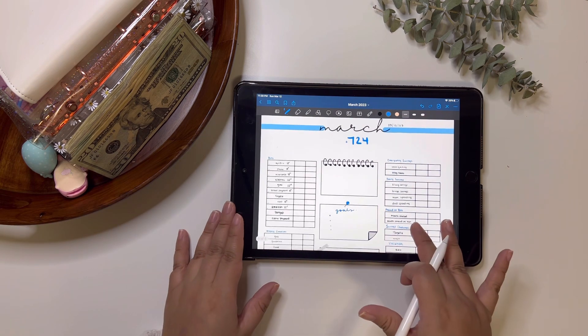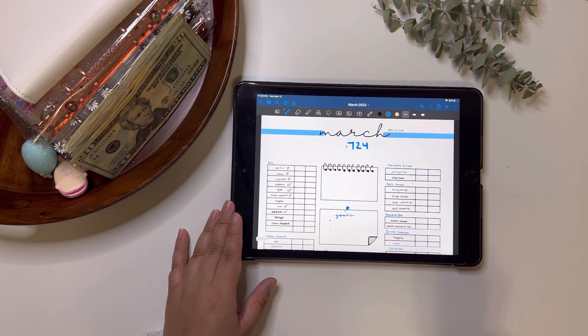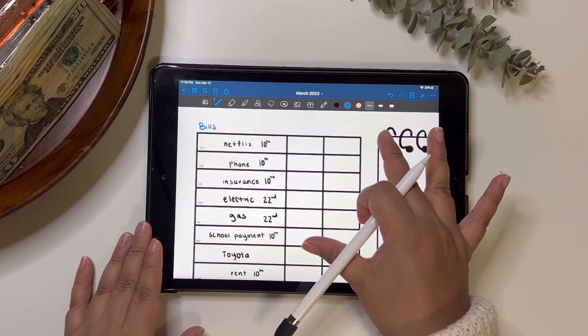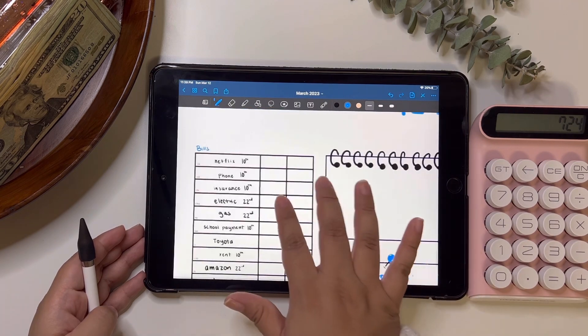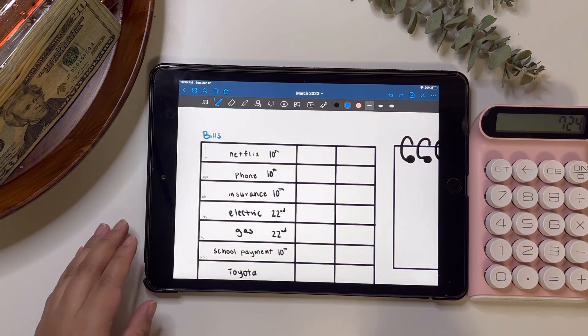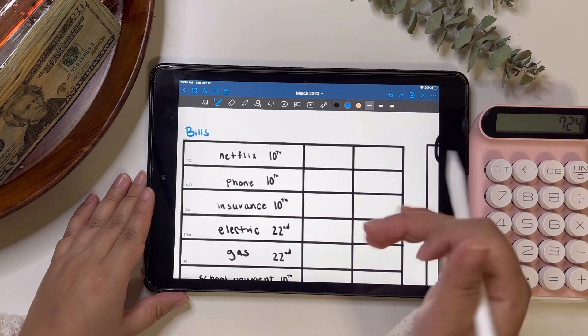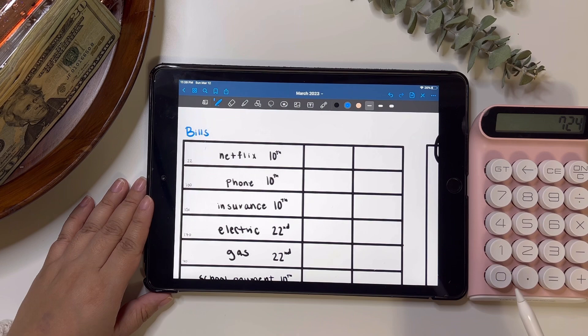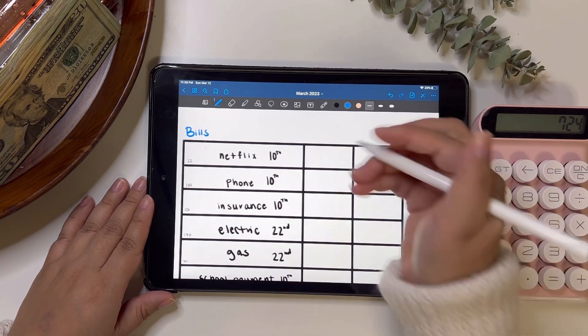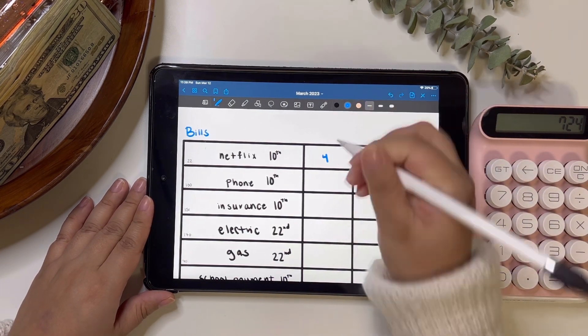So guys, we're going to be working with $724 today. As always, I go ahead and get started with my bills first. So my bills are pretty much the same every single time. So we're starting with $724. And as always, my Netflix is $22. So I split it up over four weeks. So it's about $4 per week.